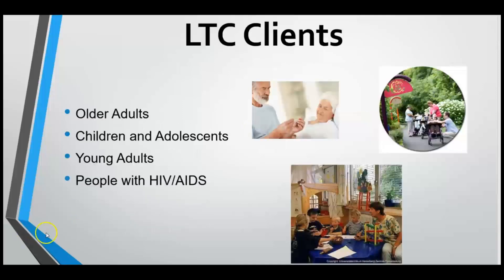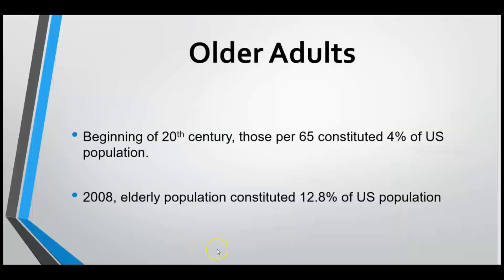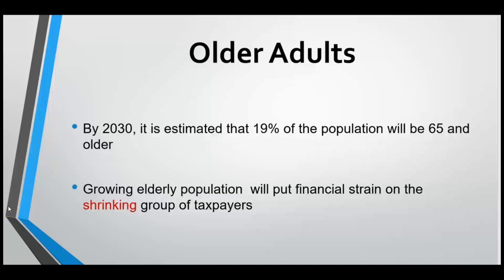Long-term care clients include older adults, children, adolescents, young adults, and people with HIV. Regarding older adults, those around 65 accounted for about 4% of the U.S. population at the beginning of the 20th century, rising to about 12.8% in 2008. The estimated amount for 2030 is projected to increase to about 19% for the age group 65 and older. This growing elderly population will put a financial strain on the shrinking group of taxpayers.